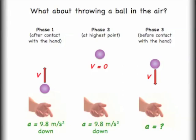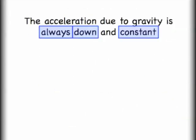And for phase three, when the ball is traveling down back towards the hand, again the acceleration is 9.8 meters per second squared down. You will notice something very important, the acceleration due to gravity is always down and always constant.